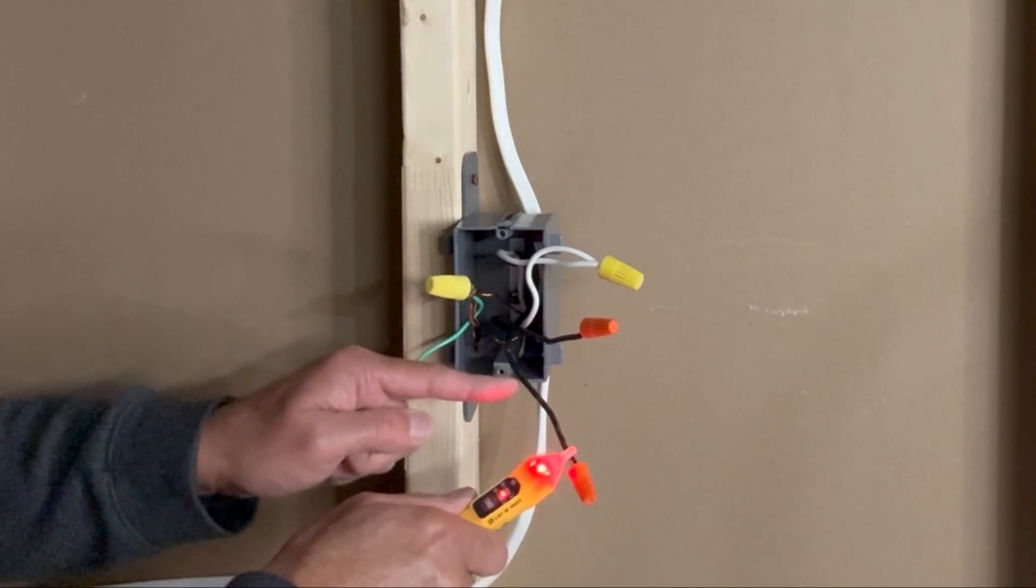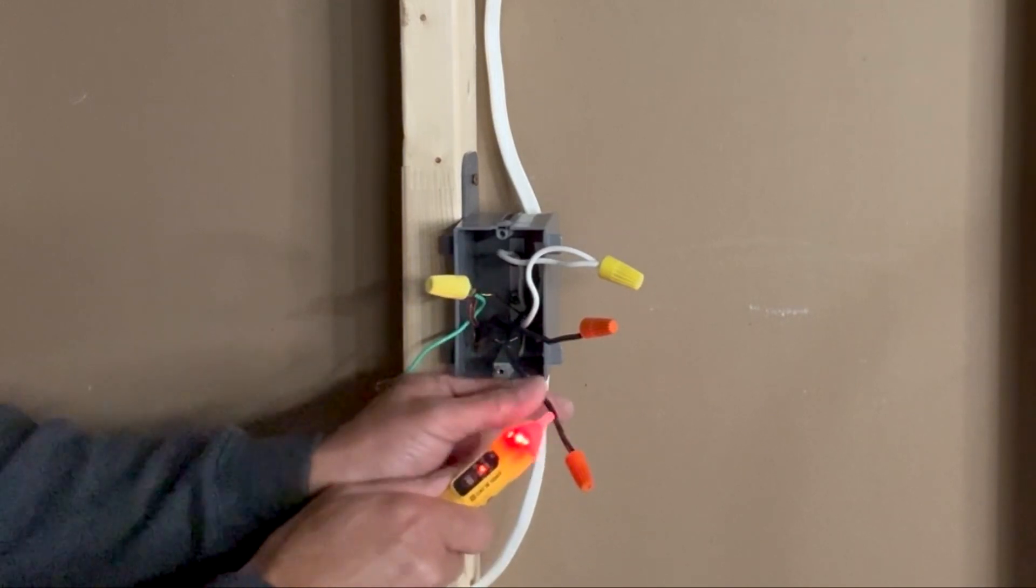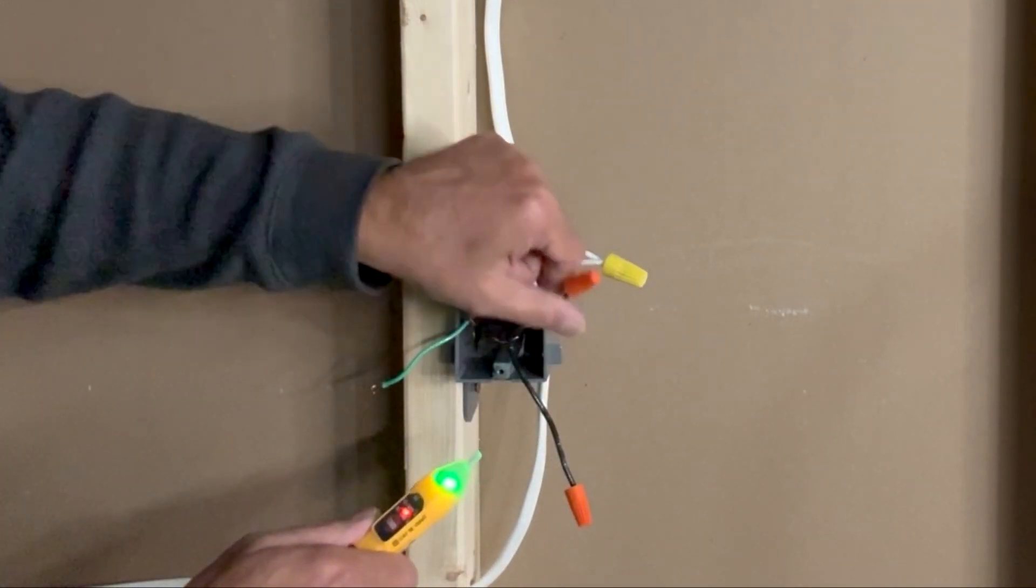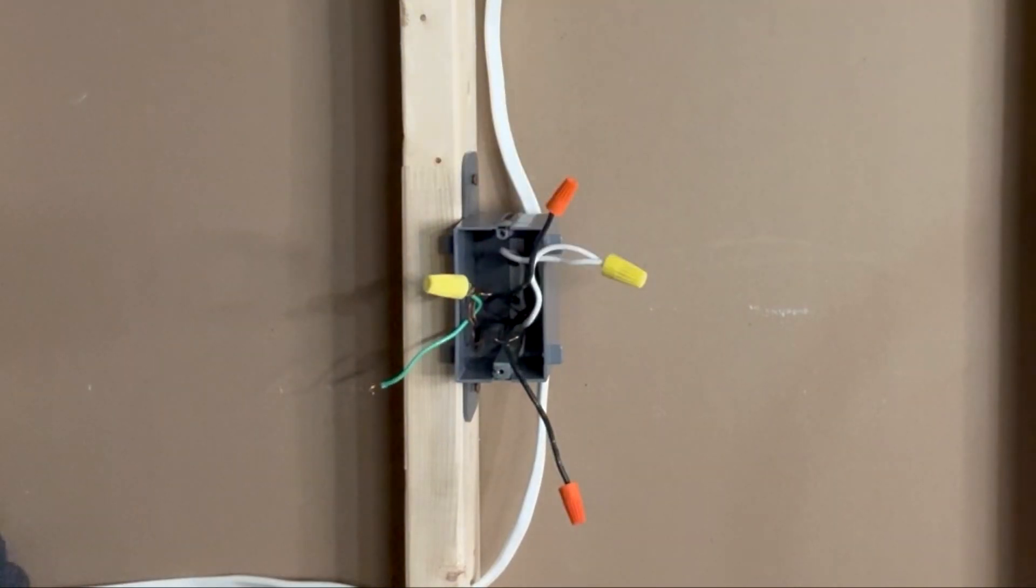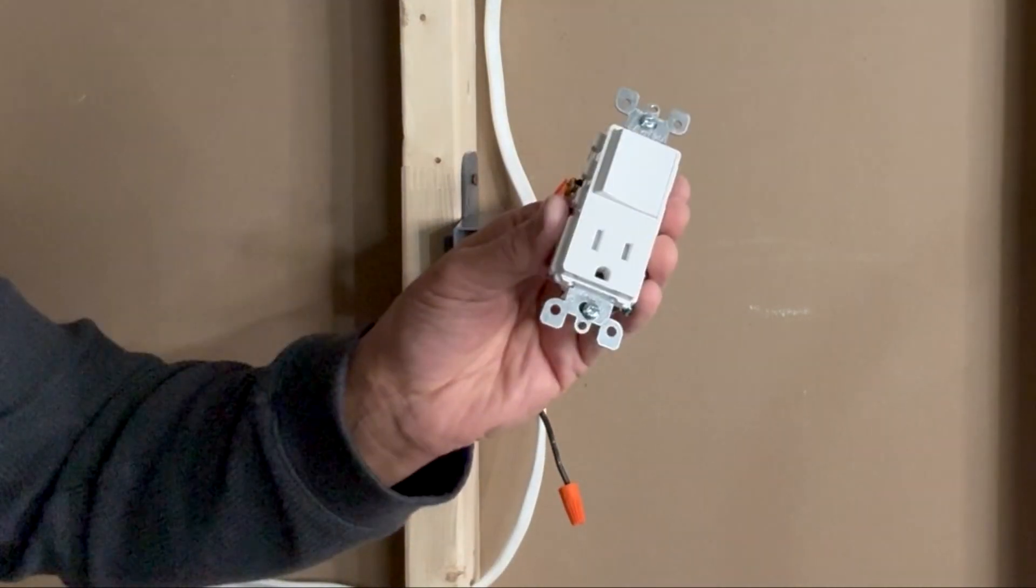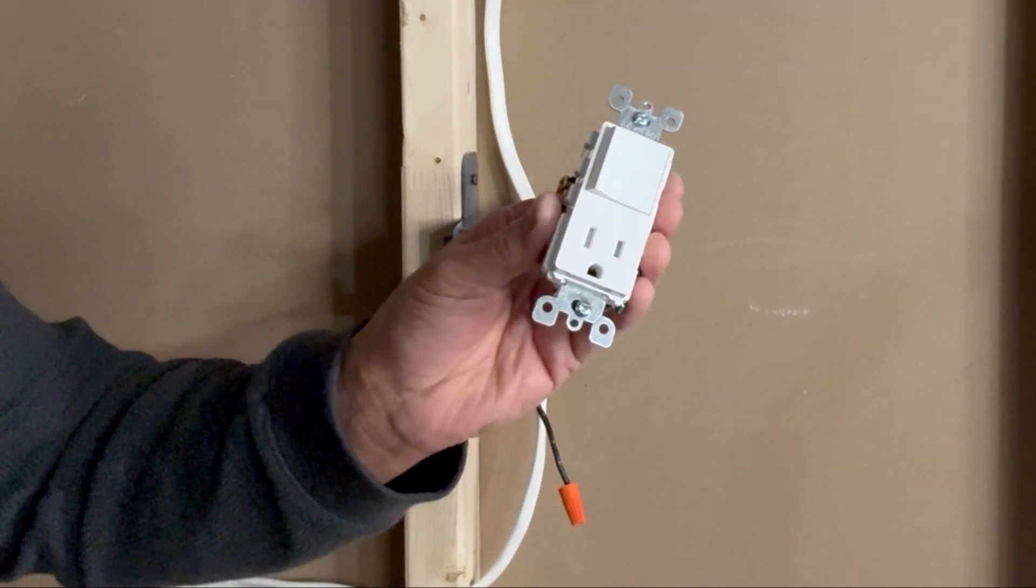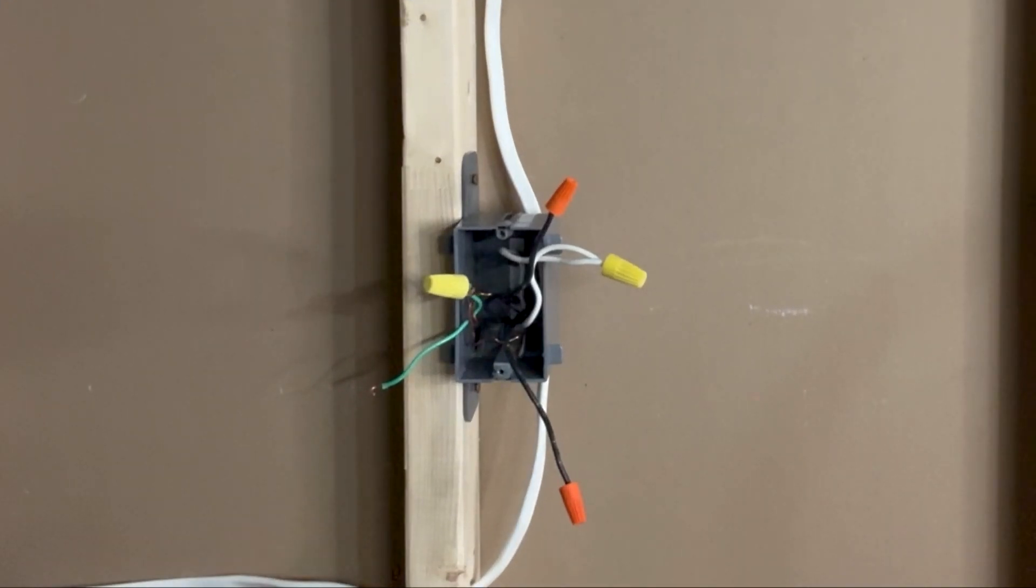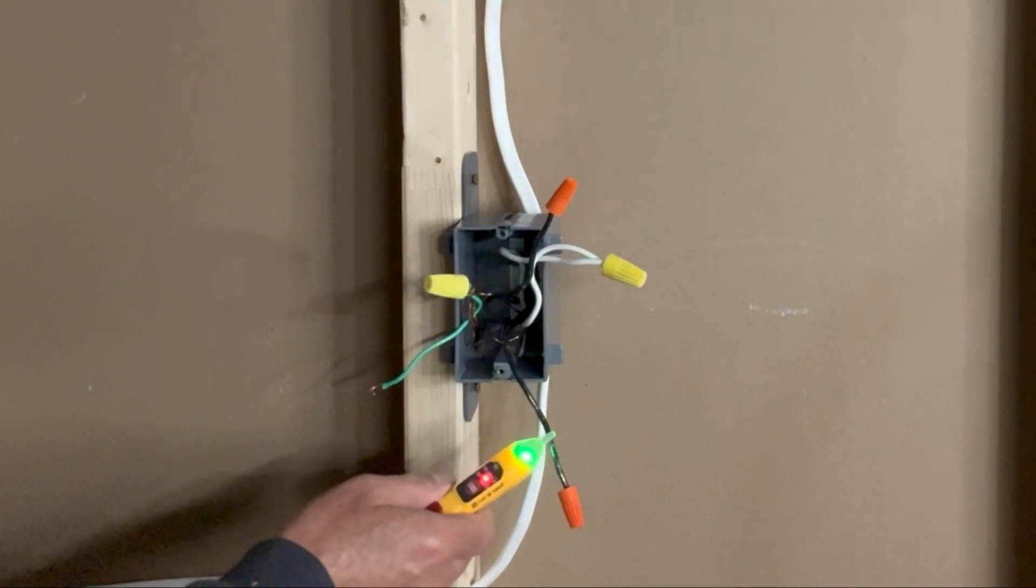So this black wire at the bottom is my line wire. I will keep it down and keep this wire up. I will turn off power again and then connect the new switch and outlet combination device. Power is off but I will double check to make sure that it is really off.